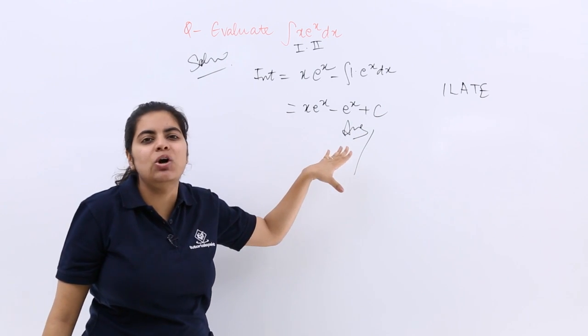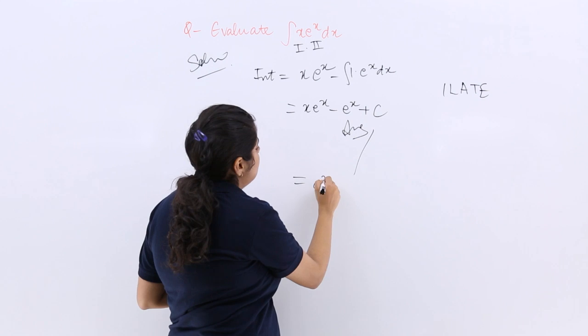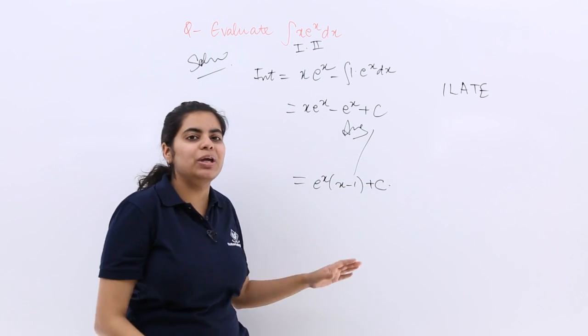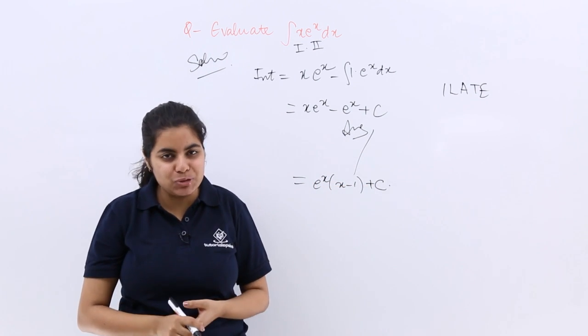In some books you may not see this as the last step. The last step may be e raised to the power x is common and plus c. So even you can go with that step as the final step too.